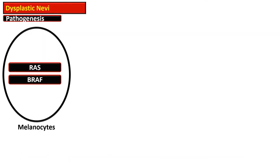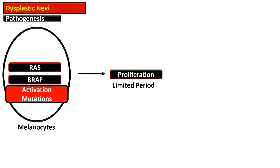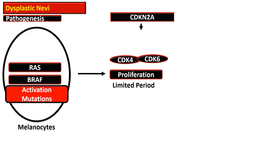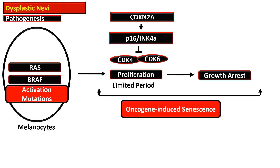Like common nevi, in dysplastic nevi there are activating mutations in RAS and BRAF serine-threonine pathways, resulting in proliferation of melanocytes for a limited period and expression of CDK4 and CDK6. Then there is expression of cyclin-dependent kinase inhibitor 2, responsible for liberation of negative regulators of CDK4 and CDK6. These negative regulators are p16 INK4a, and this is responsible for growth arrest termed oncogene-induced senescence.